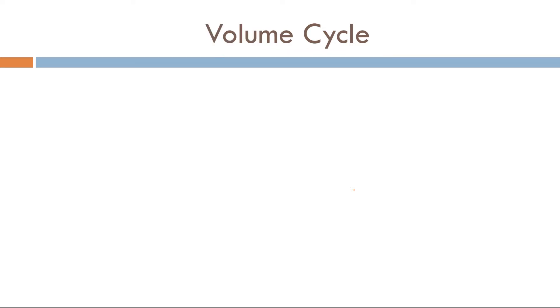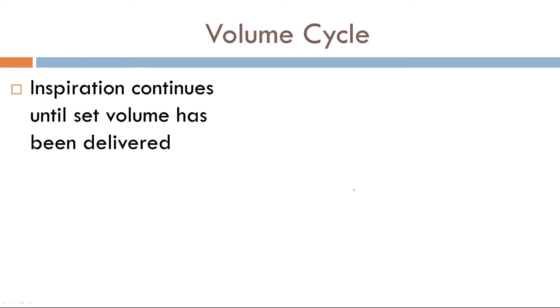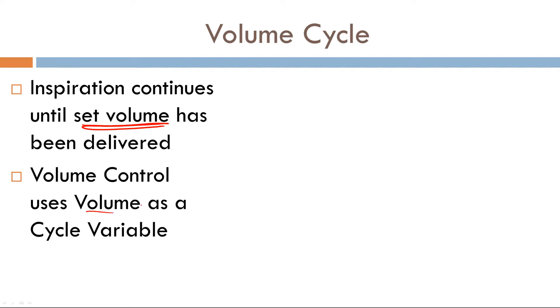Let's talk about volume cycle. The definition again is inspiration will continue until a set volume has been delivered. So interestingly enough, in volume control ventilation, the cycle variable is volume.